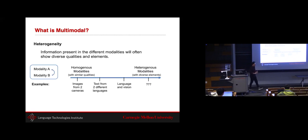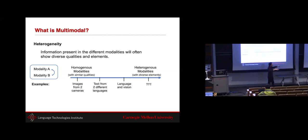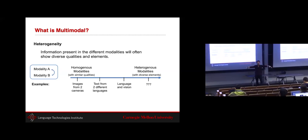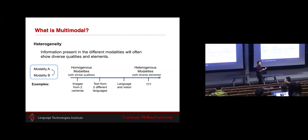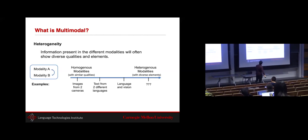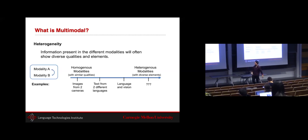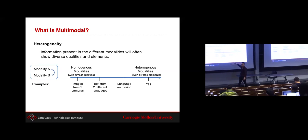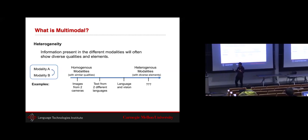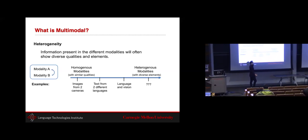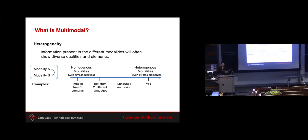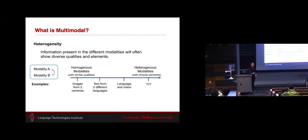This notion of heterogeneity is important. Multimodal research looks at how different these modalities are. On the homogeneous end, images from two cameras are nearly identical. Moving toward heterogeneous, you have text from different languages, then language and vision with entirely different sensory modalities. This spectrum from homogeneous to heterogeneous defines the different types of computation we need to apply on these modalities.